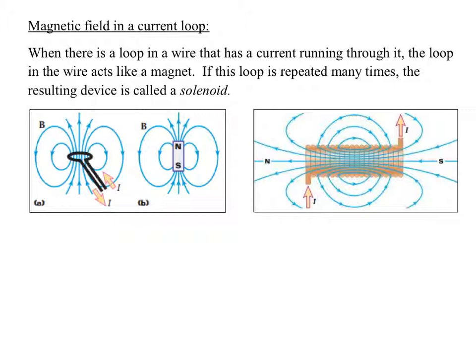When you have a wire with a single loop in it, what you get is like a temporary magnet. If the field is coming out of the middle and coming back around, this is like a north pole up top and a south pole on the bottom. The field comes out the top of the loop — that's like a north pole. The field returns at the bottom — that's like the south pole.